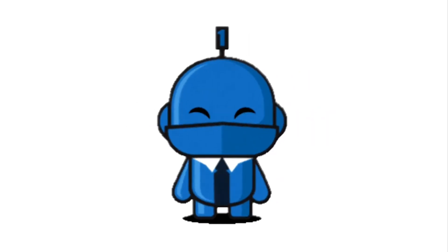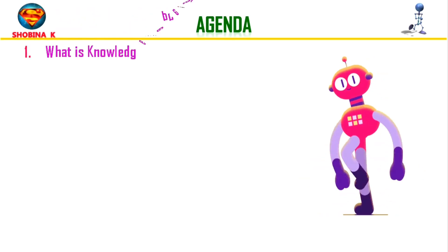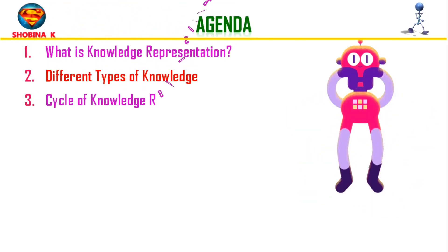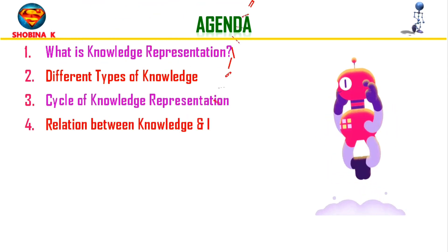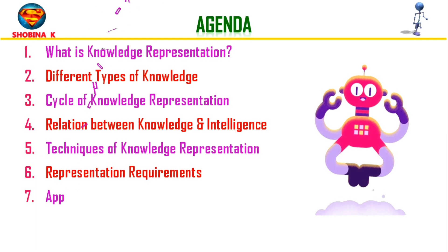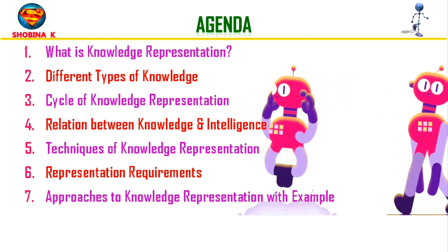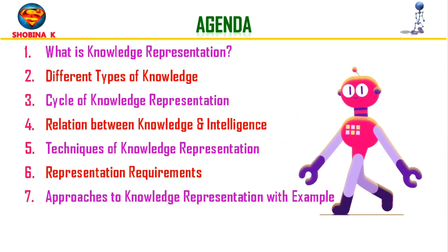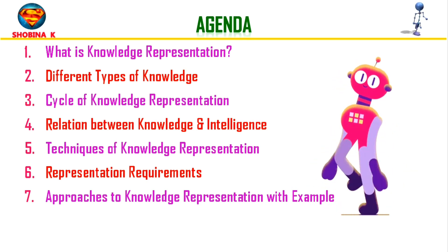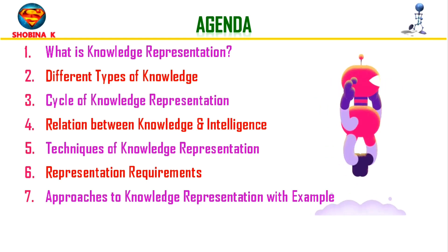Before we begin the session, let's look at the agenda. First, we will see what knowledge representation is. Then we will talk about the different types of knowledge and how they are represented. Next, we will see the cycle of knowledge representation in AI. Once this is done, we will see the relationship between knowledge and intelligence. Also, we will discuss the different techniques involved in knowledge representation and finally the different requirements.